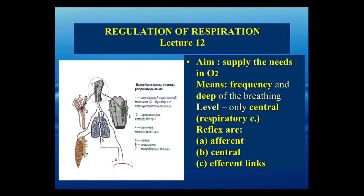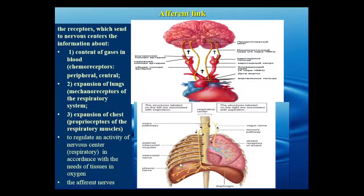The afferent link consists of receptors including mechanoreceptors of the lungs, chemoreceptors of vessels, and proprioceptors of skeletal muscles, which send sensory information to the center located in the medulla oblongata. From the medulla oblongata, efferent commands reach the skeletal muscles and the diaphragm that provide external respiration.